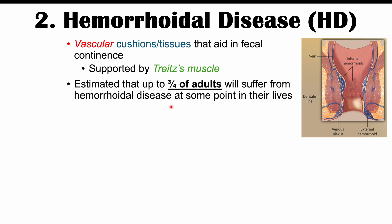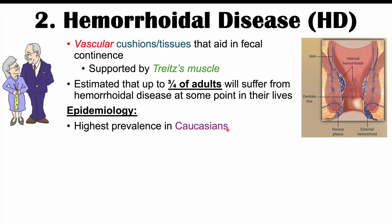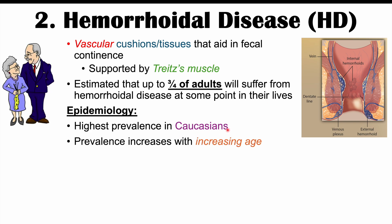It's estimated that up to three quarters of adults will suffer from hemorrhoidal disease at some point in their lives, making it a very common condition. It has the highest prevalence in Caucasians, and the prevalence of hemorrhoidal disease increases with increasing age, especially after the age of 45.